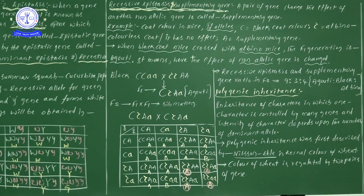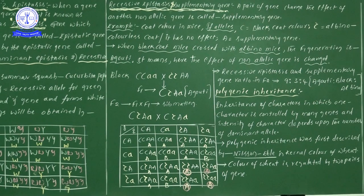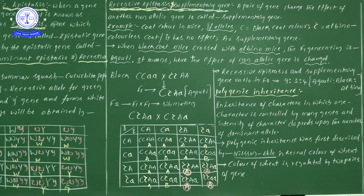The color of wheat kernel is regulated by two pairs of genes. To summarize this video: under epistasis there are two types — dominant epistasis (phenotypic ratio 12:3:1) and recessive epistasis (ratio 9:3:4). Along with a small introduction to polygenic inheritance. Be safe, watch these videos carefully, and learn the knowledge. Thank you.